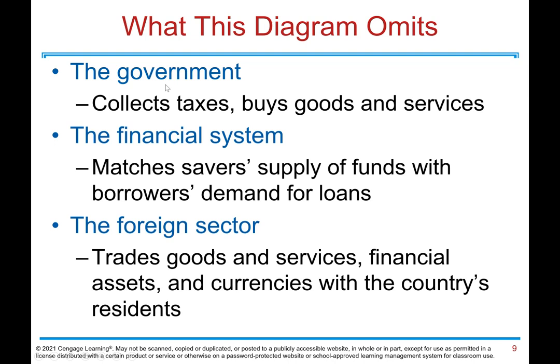What does this diagram omit? The government — which collects taxes and buys goods and services — is a big part of our economy. It also omits the financial system, which deals with matching savers' supply of funds with borrowers' demand for loans, and the foreign sector, which trades goods, services, financial assets, and currencies with the country's residents.